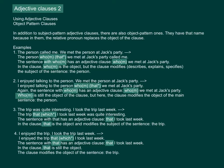Take for example: 'The person called me. We met the person at Jack's party.' Combined: 'The person whom or that we met at Jack's party called me.' The sentence with who or whom has an adjective clause: 'who or whom we met at Jack's party.' In the clause, who or whom is the object, but the clause modifies, describes, explains, and specifies the subject of the sentence — 'the person.'